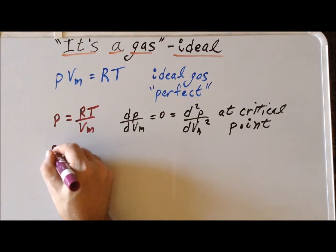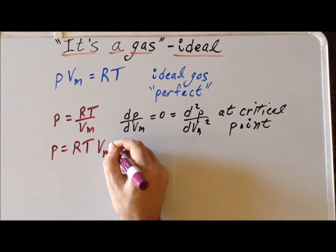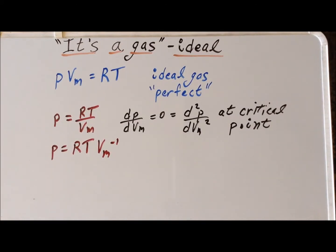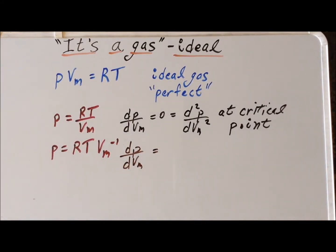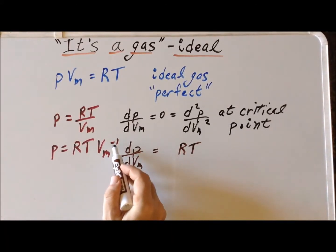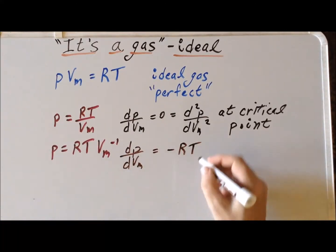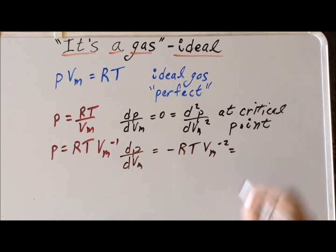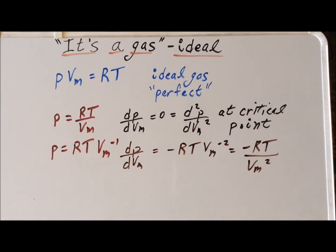It is sometimes more convenient to write the equation of state in an exponential form, so we can write P as RT times Vm to the minus one. This makes it easier to apply the laws of differentiation. Taking the first derivative of the pressure with respect to the molar volume: R and T are each constant, the exponent is minus one, so we bring down a minus one and reduce the exponent by one, giving Vm to the minus two. This is more conventionally written as minus RT divided by Vm squared.